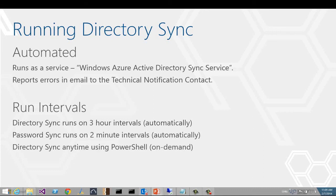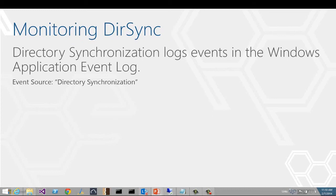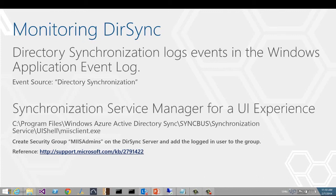You can also run directory sync on demand. This is useful in situations where a new user has been added to or a user is removed from the on-premise directory. If the situation requires the change to be immediate, you can invoke the directory sync using PowerShell. As far as monitoring directory sync, the Windows application event log is where you will find activity logs for the directory synchronization tool. However, if you prefer a visual experience, you can also run the synchronization service manager. Heads up — if you do choose this option, you may get an error saying the user is not a member of the required security group. If so, you need to create a security group named MIIS admins and add the logged-in user to it. There's a KB article that explains why this happens and the workaround in more detail.